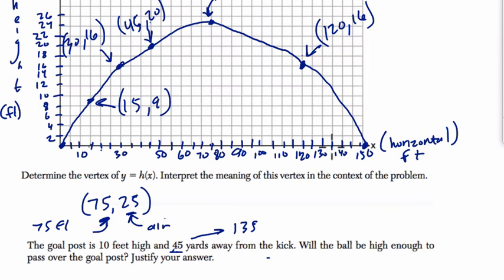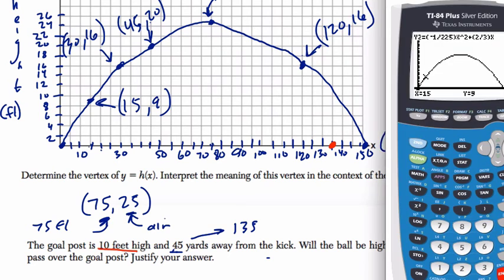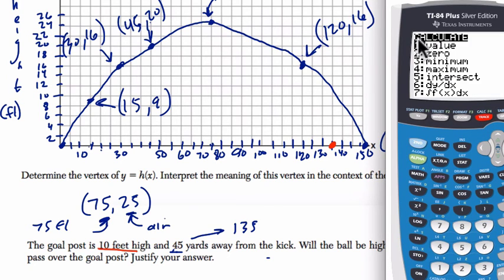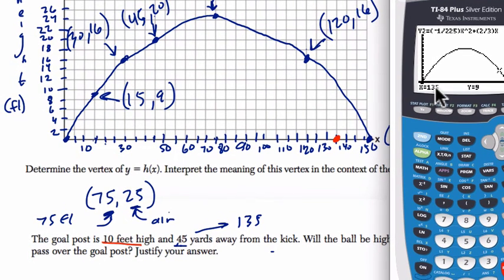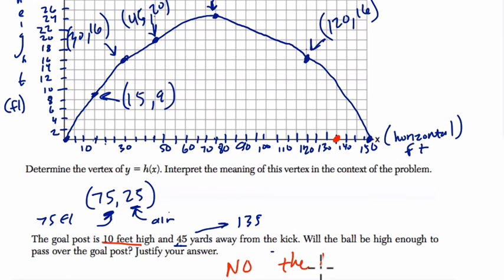So we're at about 135 feet here. And we want to know, will the ball be at least 10 feet high? The calculator is our friend. Let's use it. Second trace. Hit value. That will tell you, for any x value, what's the height? So I'm going to enter in 135. Hit enter. That tells us, at 135 feet in the horizontal, the ball will be 9 feet in the air. So the answer is no. The ball will only be 9 feet in the air. So, and you can show that by writing another point, 135, 9. That's the actual point.